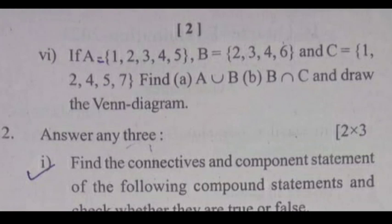If A set, B set, C set, then A union B, B intersection C and draw the Venn diagram.